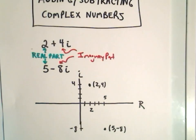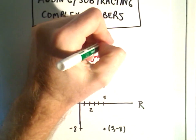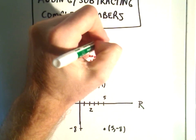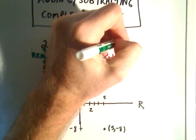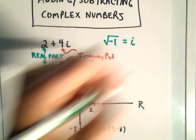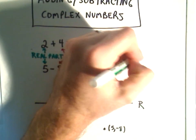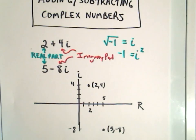Remember, imaginary numbers: we say the square root of negative 1 equals i, or equivalently, i squared equals negative 1. This now allows us to take square roots of negative numbers, for example.